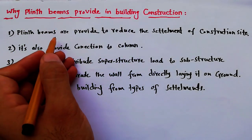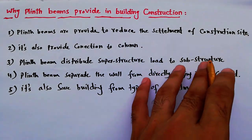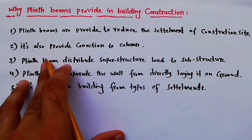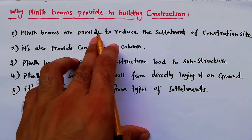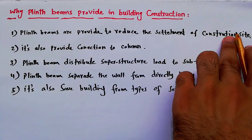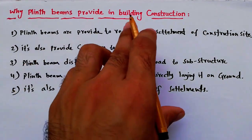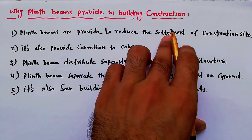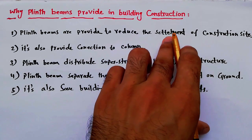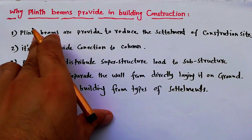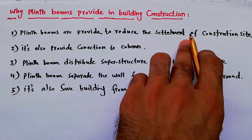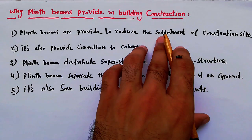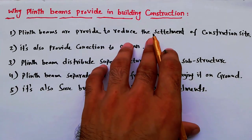The first point is: plinth beams are provided to reduce the settlement of a construction site. We know that we have different types of settlement in soil. If we don't provide the plinth beam and any soil has low bearing capacity, settlement will occur — maybe after some days. Settlement is a dangerous thing for a construction site; it can cause your building or construction works to fail.